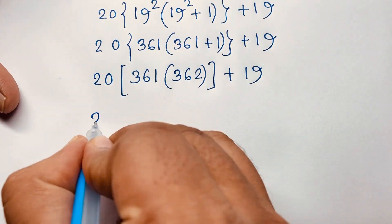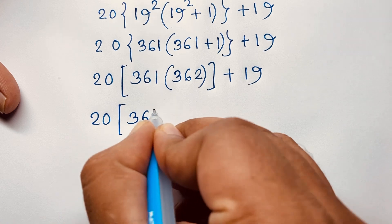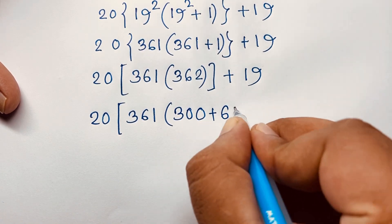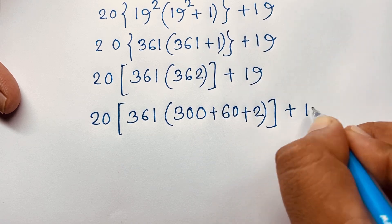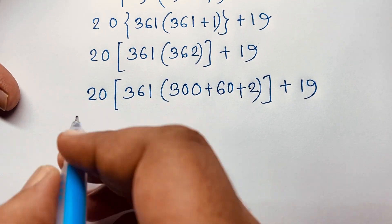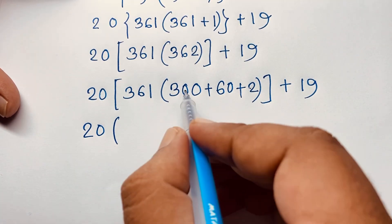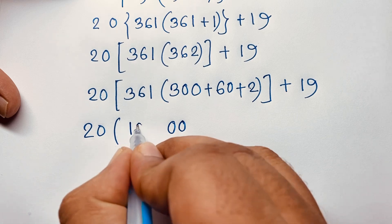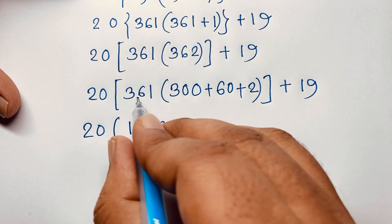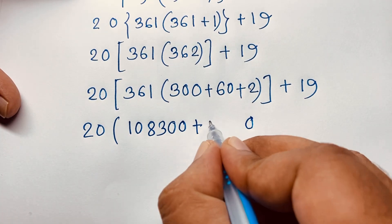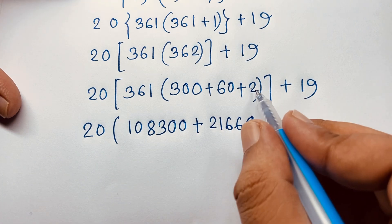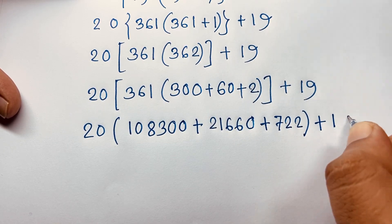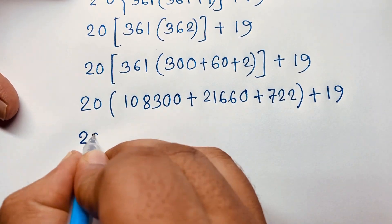Now computing 20 times 361 times 362: breaking down 362 as 300 plus 60 plus 2. Taking 20 times 361: 20 times 300 gives 1083 (times 20), 60 times gives 2166, and 2 times gives 7022. Adding these partial products together.